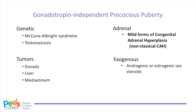Peripheral precocious puberty can also be due to excess adrenal androgens, notably congenital adrenal hyperplasia, or CAH. In the most common form, there is a mutation of an enzyme involved in the synthesis of aldosterone, cortisol, and sex steroids in the adrenal glands. In mild or non-classical CAH, the body makes enough cortisol and aldosterone to avoid acute illness, but produces excessive androgens. Patients may present with pubic hair, axillary hair, and acne; boys may have penile growth, but girls would not show breast development and boys would not show testicular enlargement. Another cause is an exogenous source of sex steroids — for example, exposure to a family member's testosterone gel, though this is much more rare.